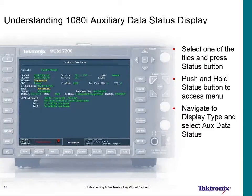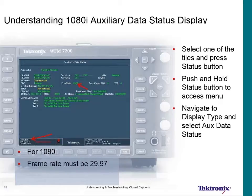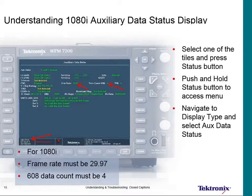For a 1080 stream, we need to verify the frame rate is actually 2997 and that the number of 608 data bytes is 4. That would be a correctly formatted stream for a 1080 transmission. In this case, the 608 payload has one caption service and the 708 payload has one caption service.